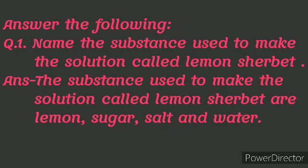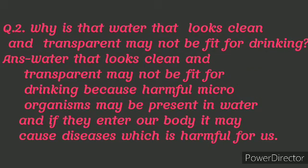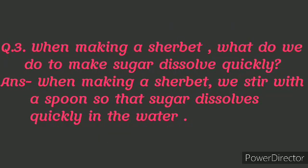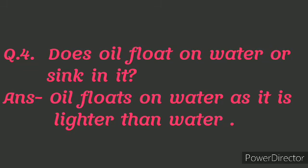Answer the following. Name the substances used to make the solution called lemon sherbet. The substances used are lemon, sugar, salt, and water. Why is it that water that looks clean and transparent may not be fit for drinking? Water that looks clean and transparent may not be fit for drinking because harmful microorganisms may be present in it, and if they enter our body they may cause diseases. When making a sherbet, what do we do to make sugar dissolve quickly? We stir with a spoon so that sugar dissolves quickly in the water. Does oil float on water or sink in it? Oil floats on water as it is lighter than water.